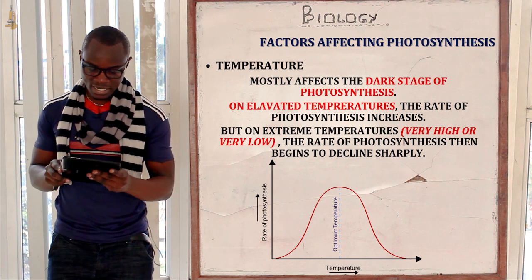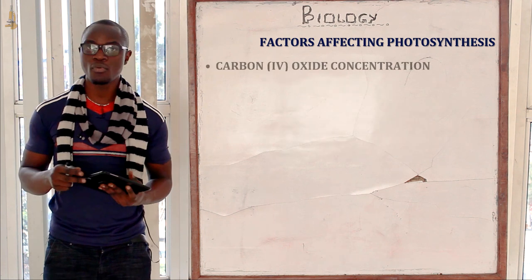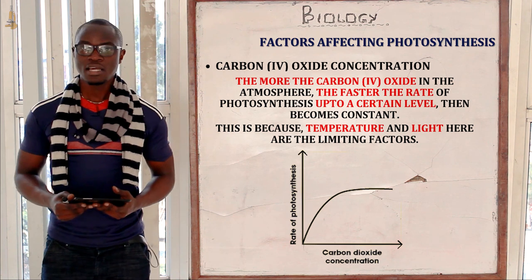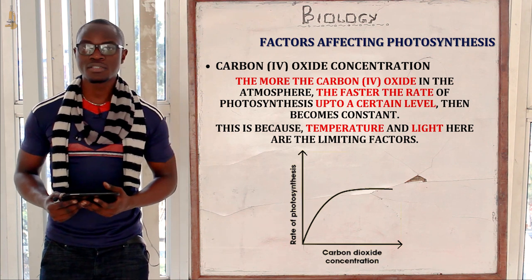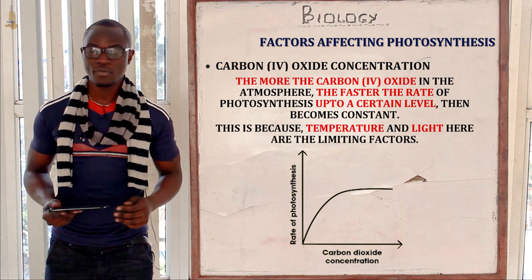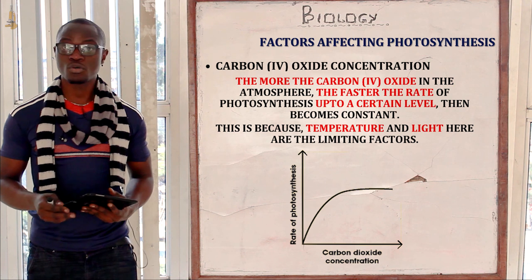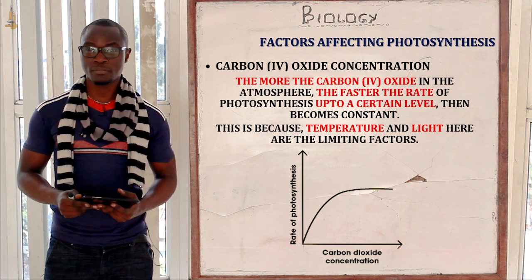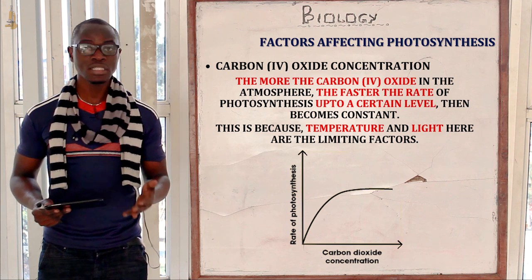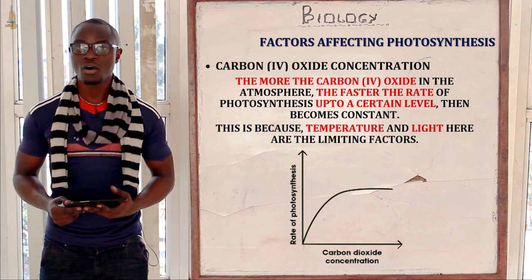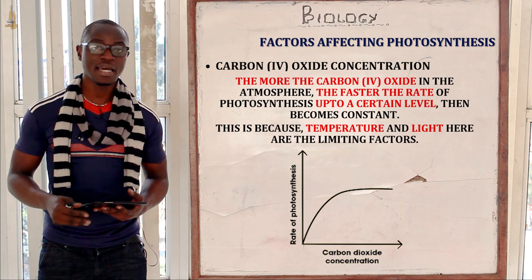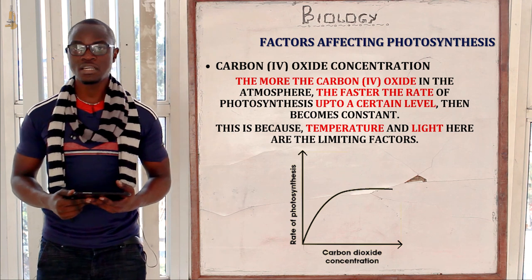The last factor is carbon dioxide concentration. The more the carbon dioxide in the environment, the more the plant will photosynthesize. This is because there will be excess CO2 to react with the hydrogen formed in the light stage to form simple sugar. However, the rate of photosynthesis levels off at high CO2 concentrations because temperature and light become limiting factors.